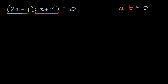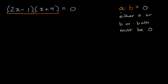So you see from this example: either a or b, or both — because zero times zero is zero — must be zero. The only way that you get the product of two quantities equal to zero is if one or both of them is equal to zero.